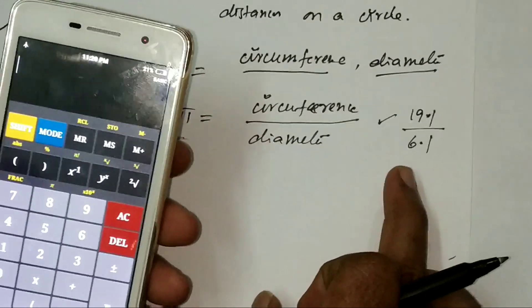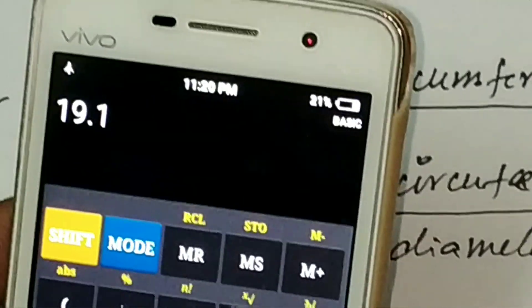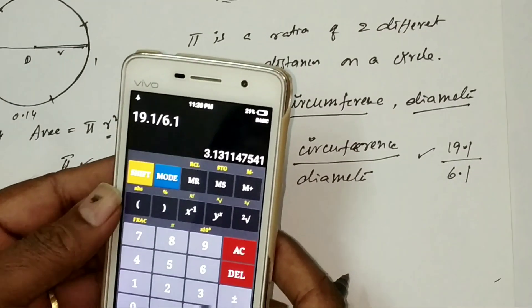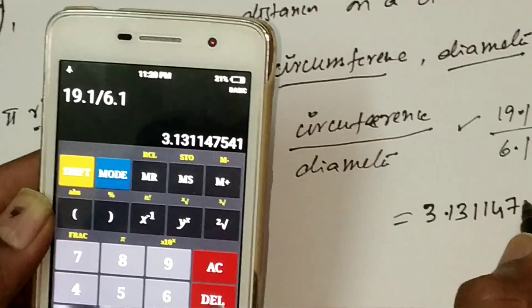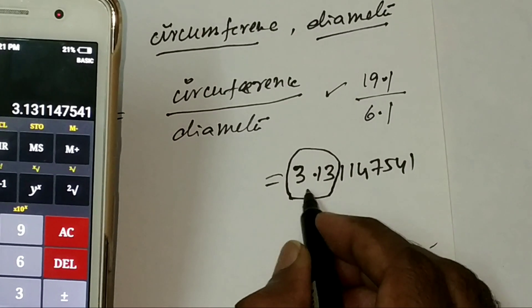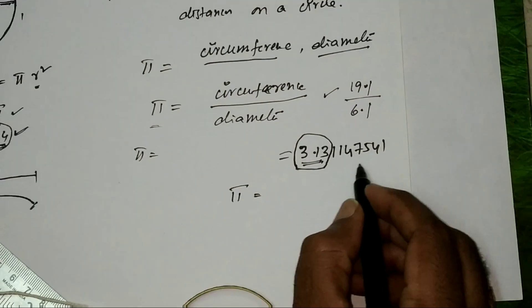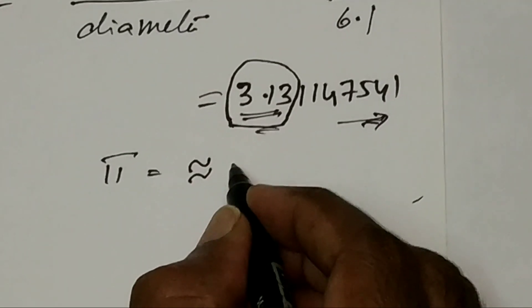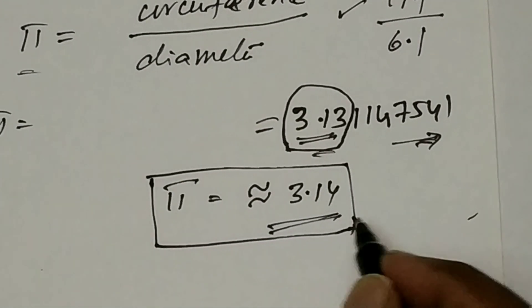Now we calculate 19.1 divided by 6.1, which equals approximately 3.1475. So the pi value we get is approximately 3.14. Pi is actually a non-repeating value that goes on forever. This is how we derive and understand the value of pi. Thank you.